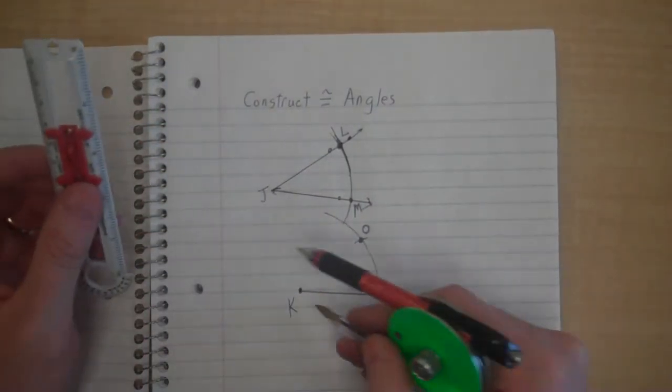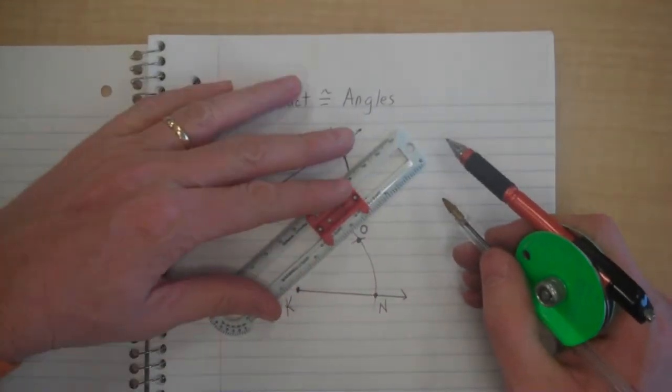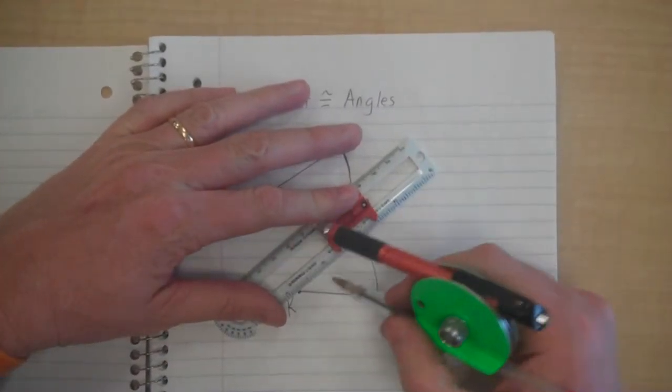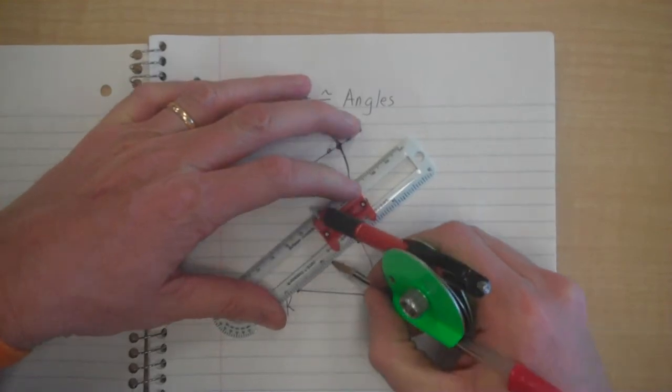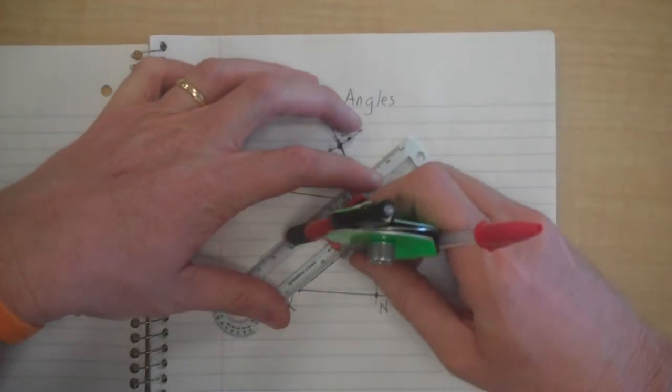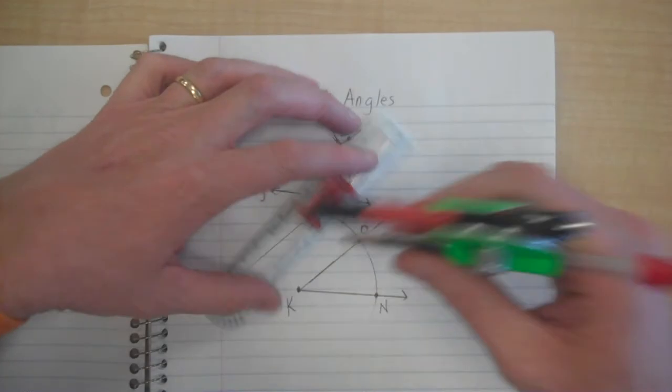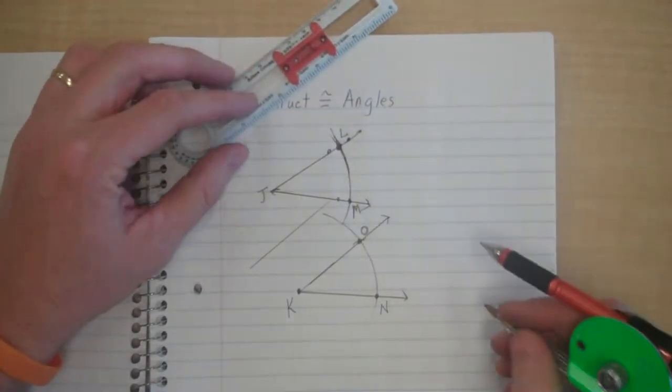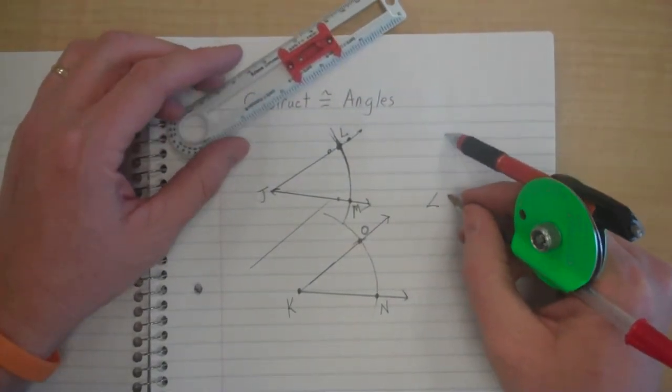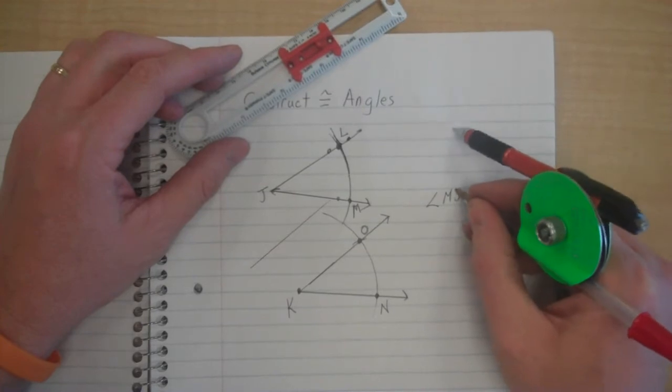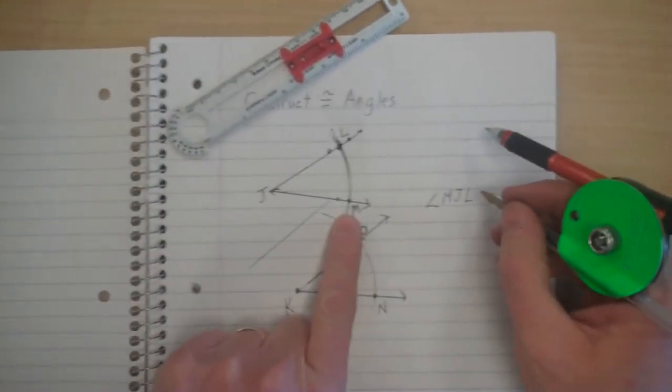Then I know how to draw this other ray now so that the angles are congruent. I draw that there, and angle MJL, which was my original angle.